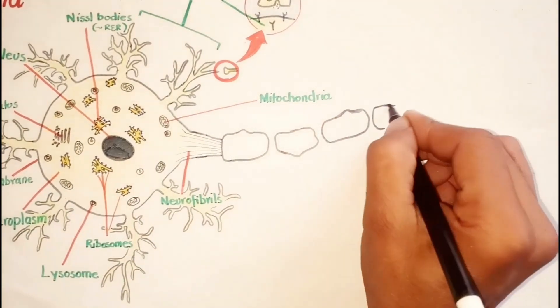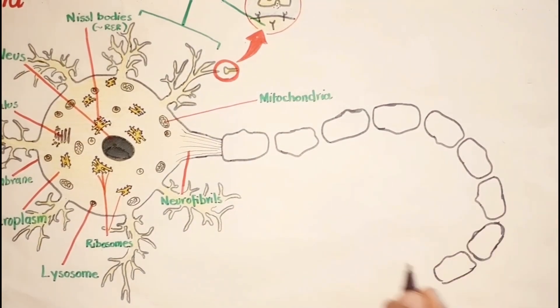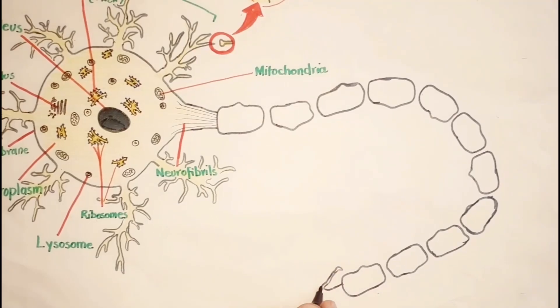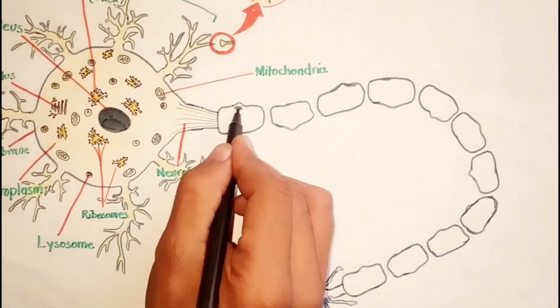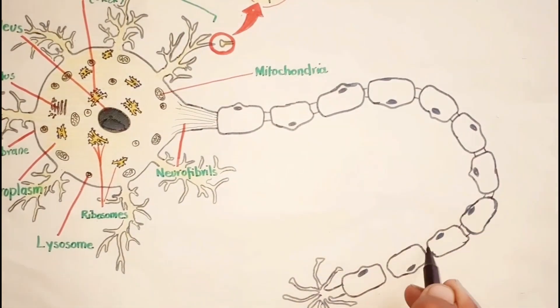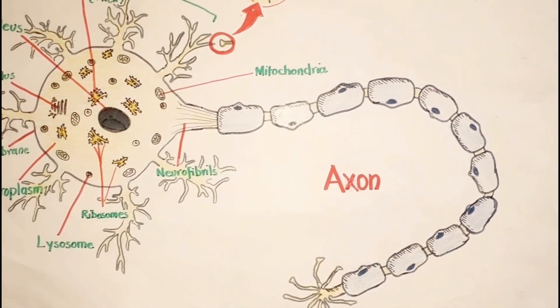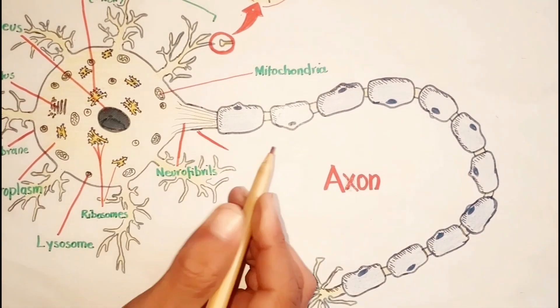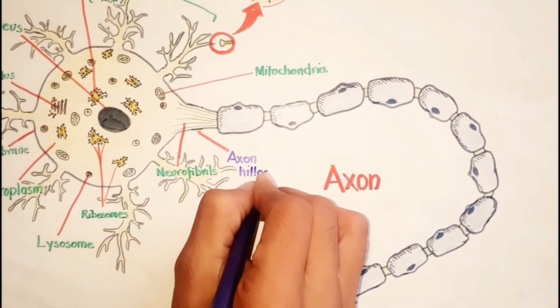After this we have axon as a part of a neuron. Axons are usually longer than dendrites and in most neurons it arises from the cell body as a cone-shaped thickening called the axon hillock.